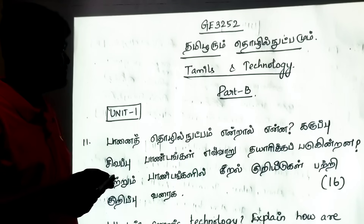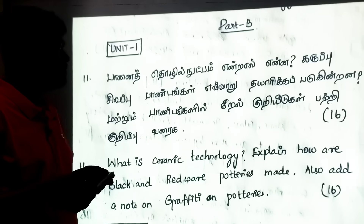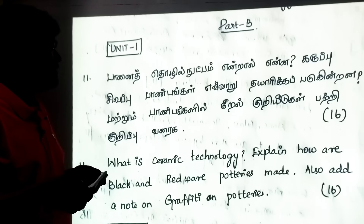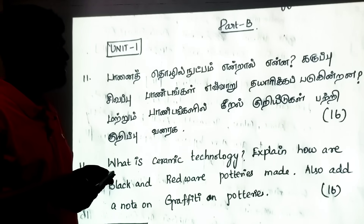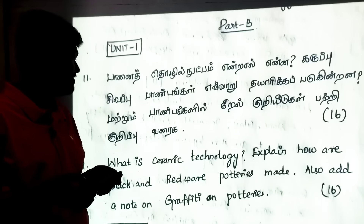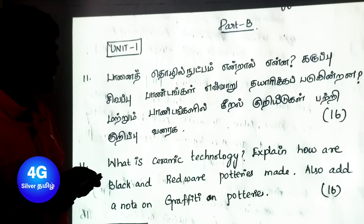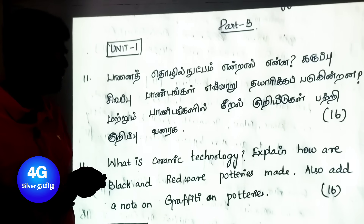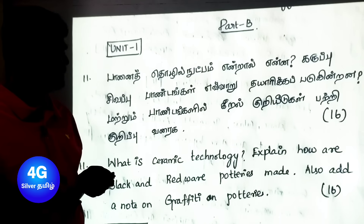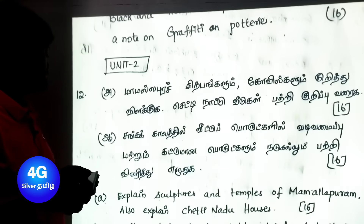Part B questions. If you want to ask the question: What is the ceramic technology? Explain how black and red ware pottery is made. Also add a note on graffiti on pottery. This is from the first unit. The next question is from the second unit.